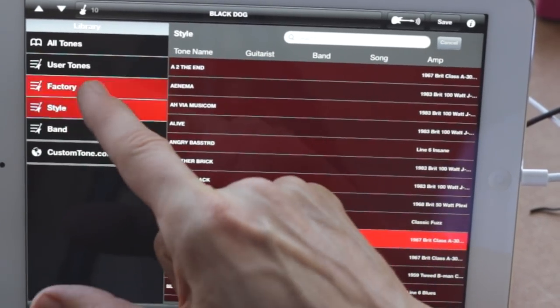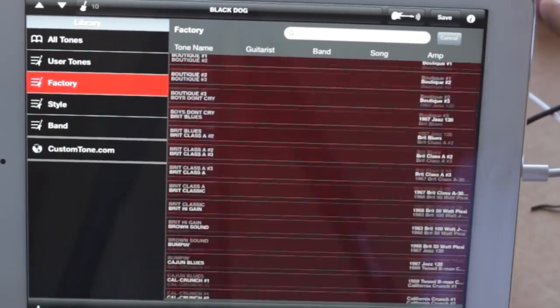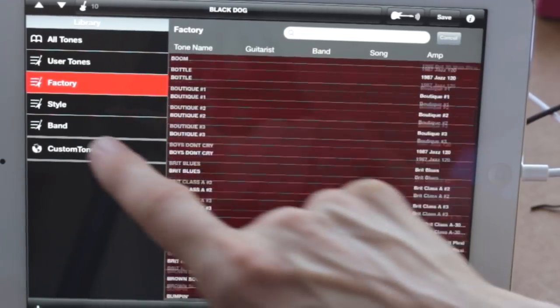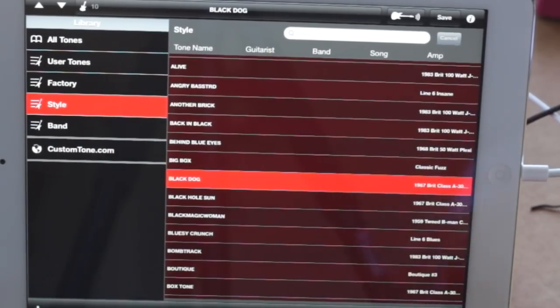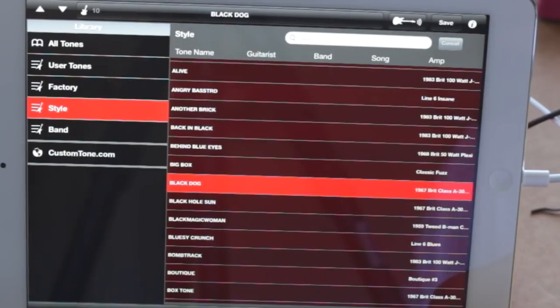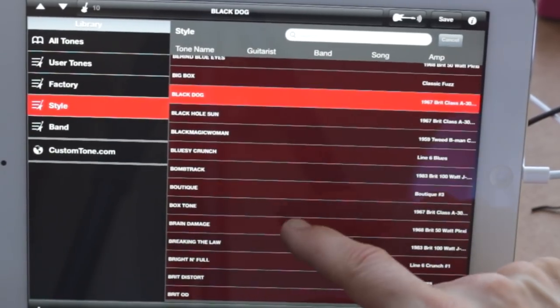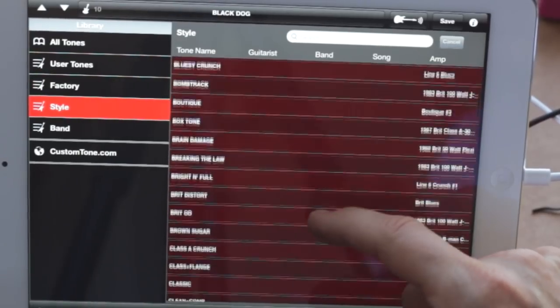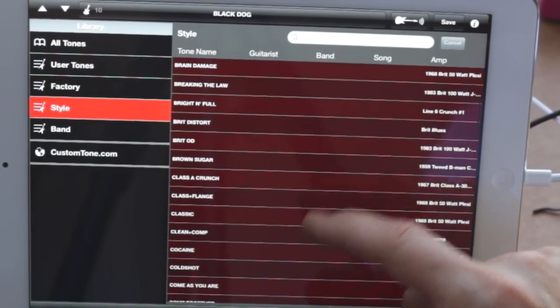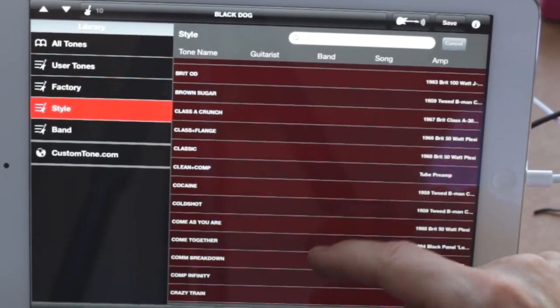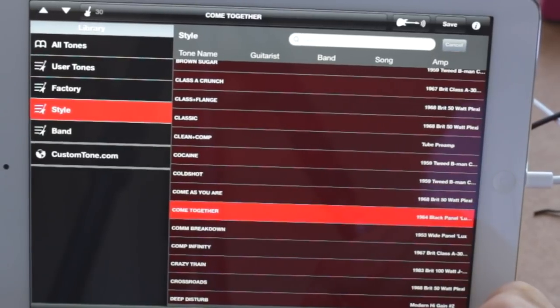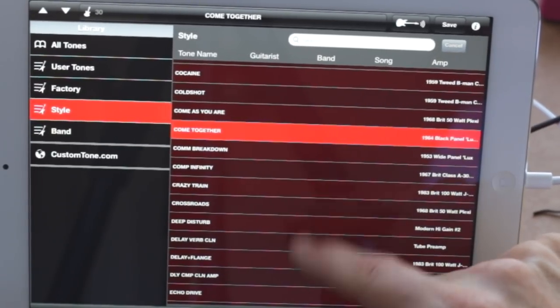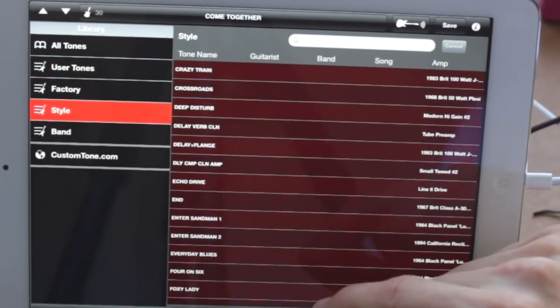And you can go by style. So these are the factory tones, right, it's quite a lot of them. And then there's styles, so this is Black Magic Woman, Blues Crunch, Bomb Track, Box Tone, Brain Damage, Brit OD, Brown Sugar Rolling Stones, Come Together.